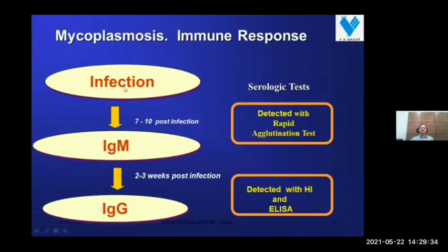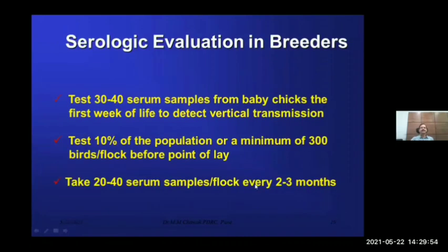After 7 to 10 days post-infection, IgM antibodies are developed and can be detected with a rapid agglutination test. After 2 to 3 weeks post-infection, IgG antibodies are developed and are detected by HI and ELISA. Serological evaluation in breeders can include testing 30 to 40 serum samples from baby chicks in the first week of life to detect vertical transmission, then 10% of the population or a minimum of 300 birds per flock before point of lay, and 20 to 40 serum samples per flock every 2 to 3 months.